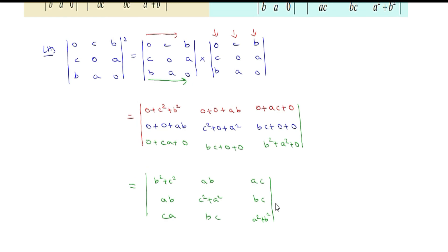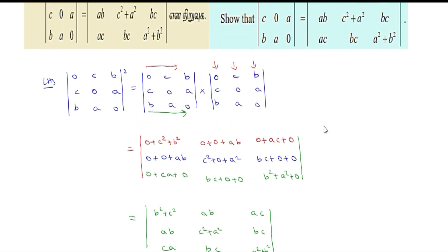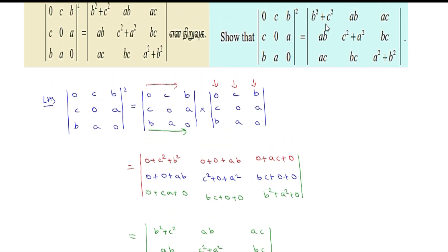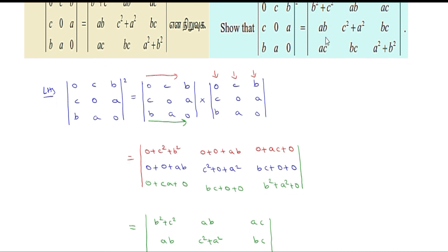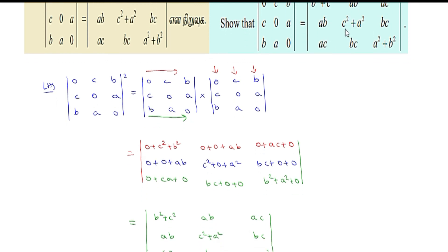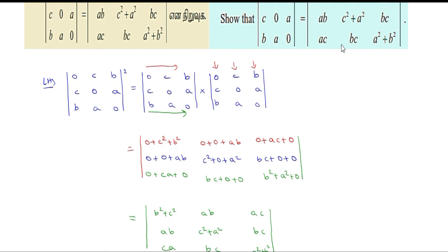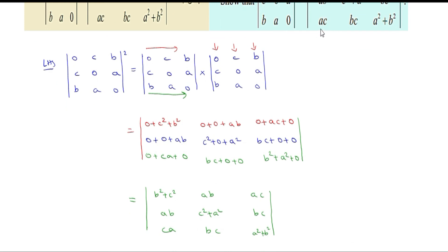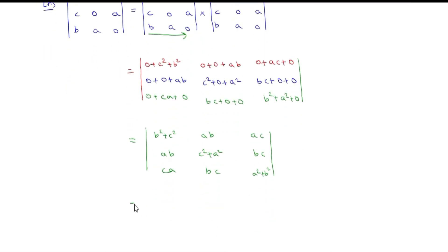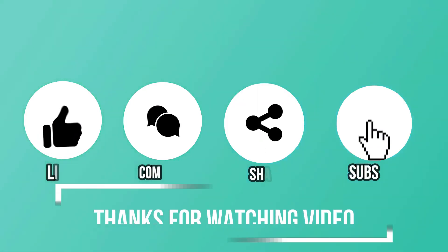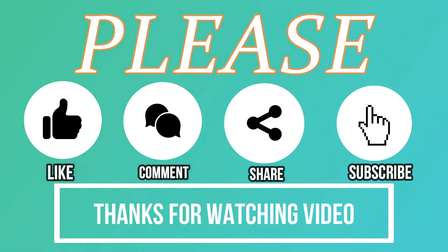So, here we have the proof. First row: B squared plus C squared, AB, AC. Second row: AB, C squared plus A squared, BC. Third row: CA, BC, A squared plus B squared. This equals the right hand side, completing the proof.